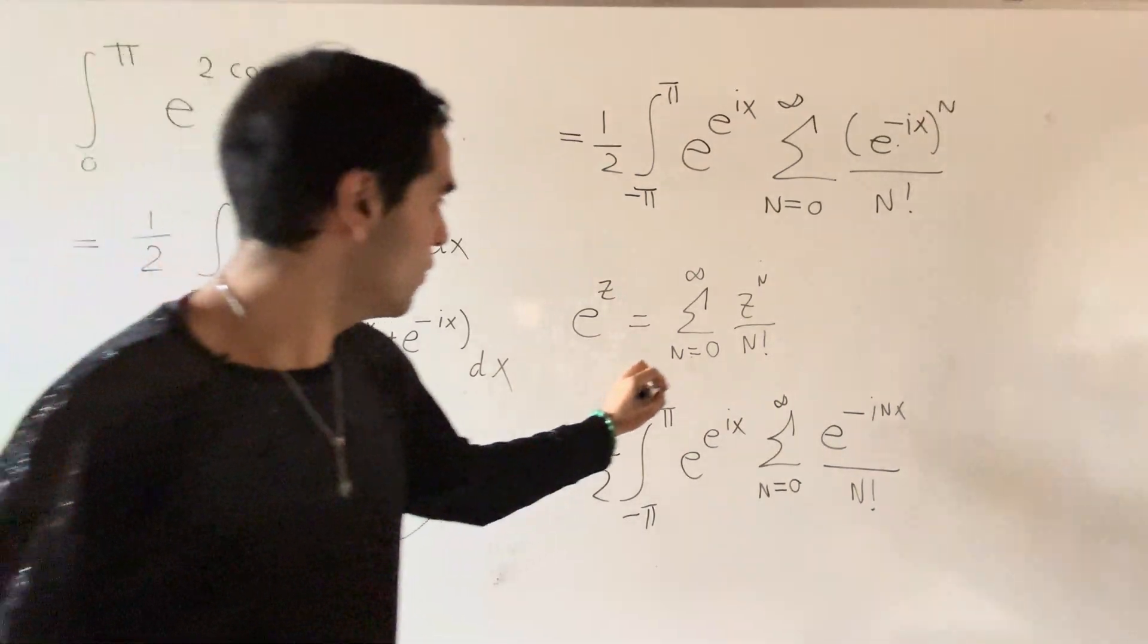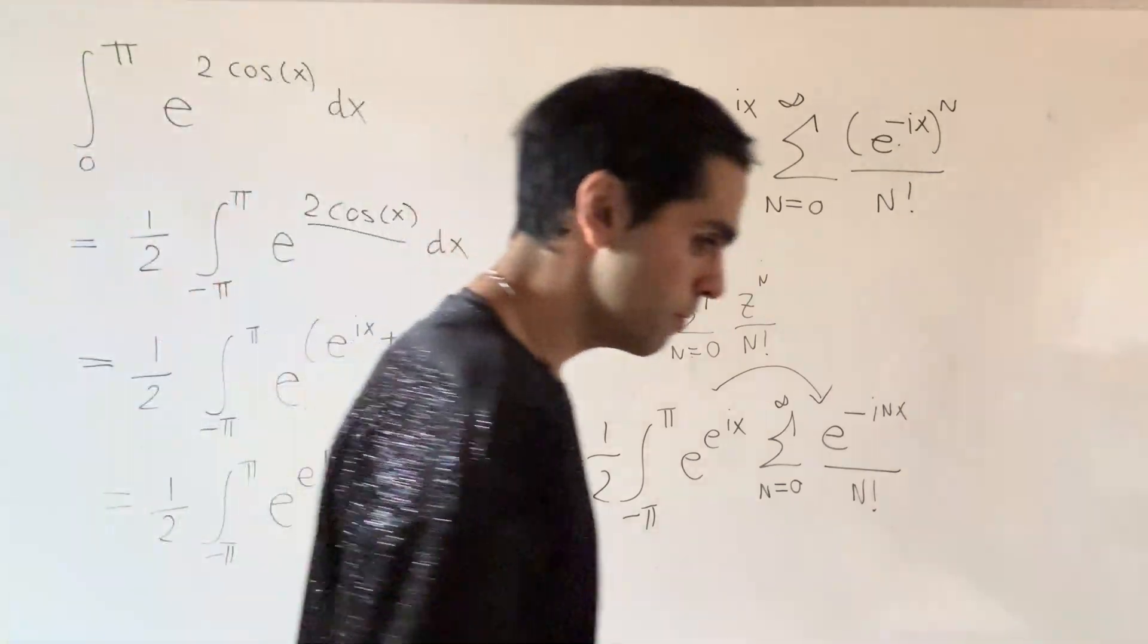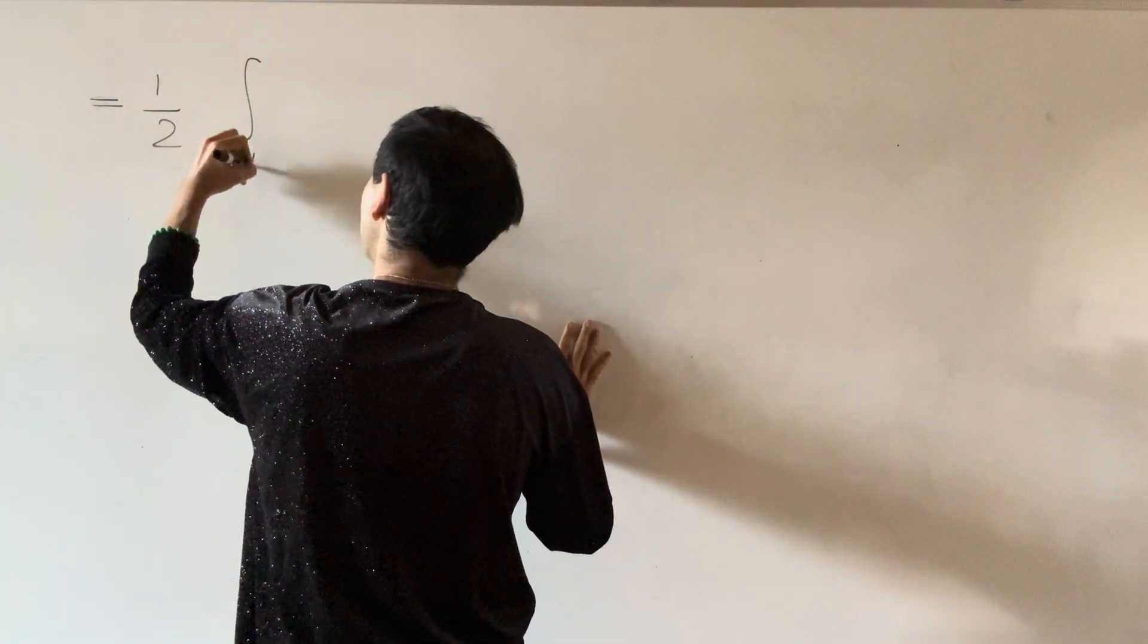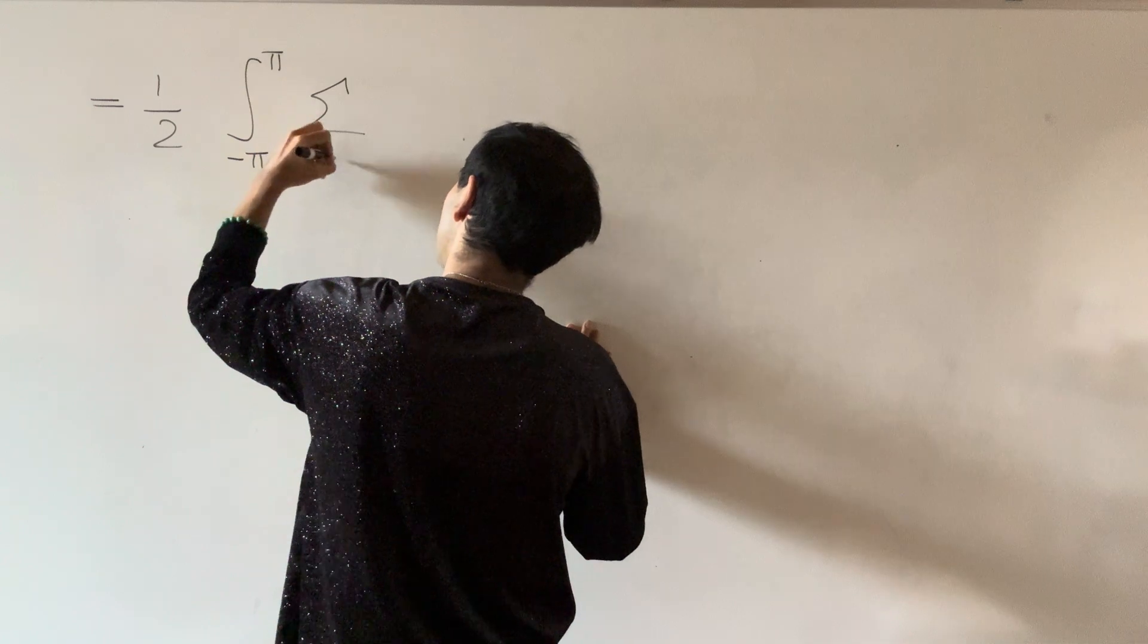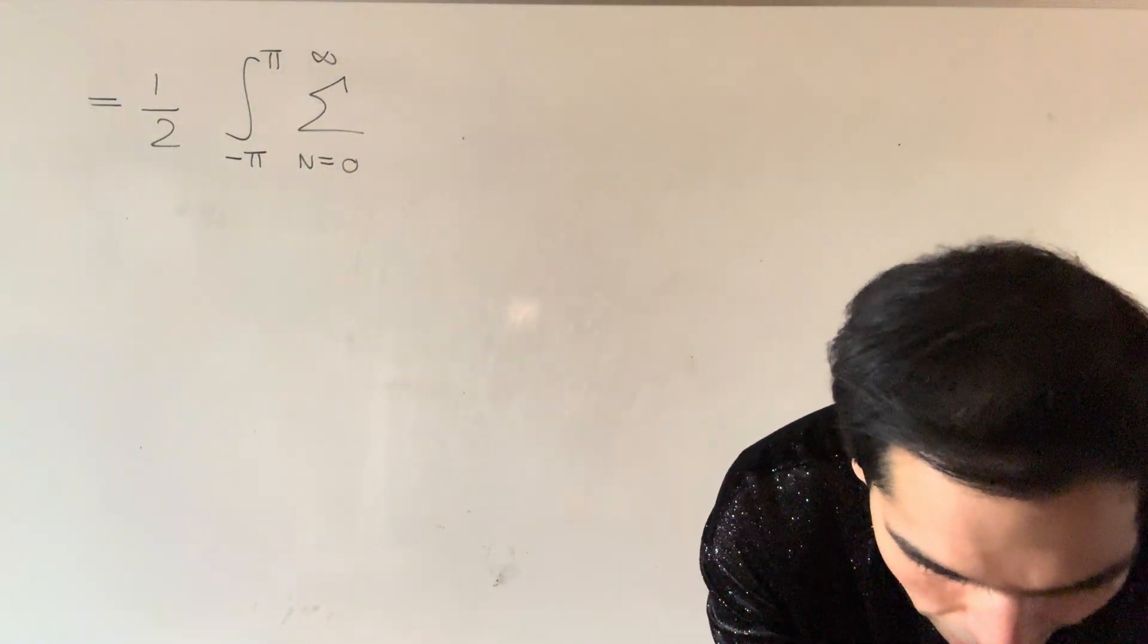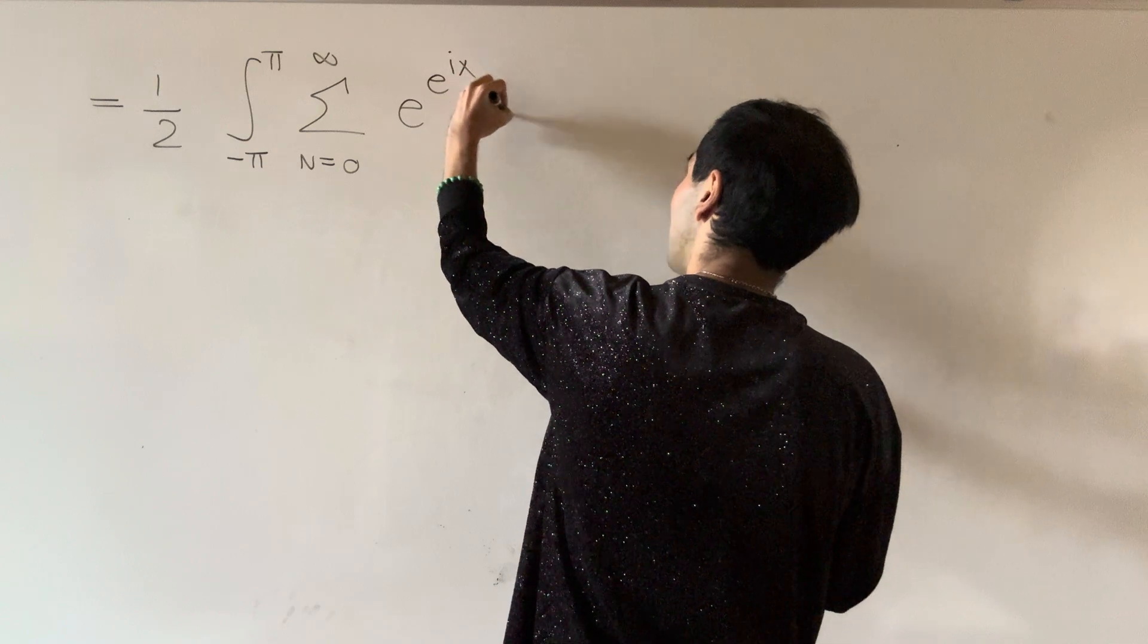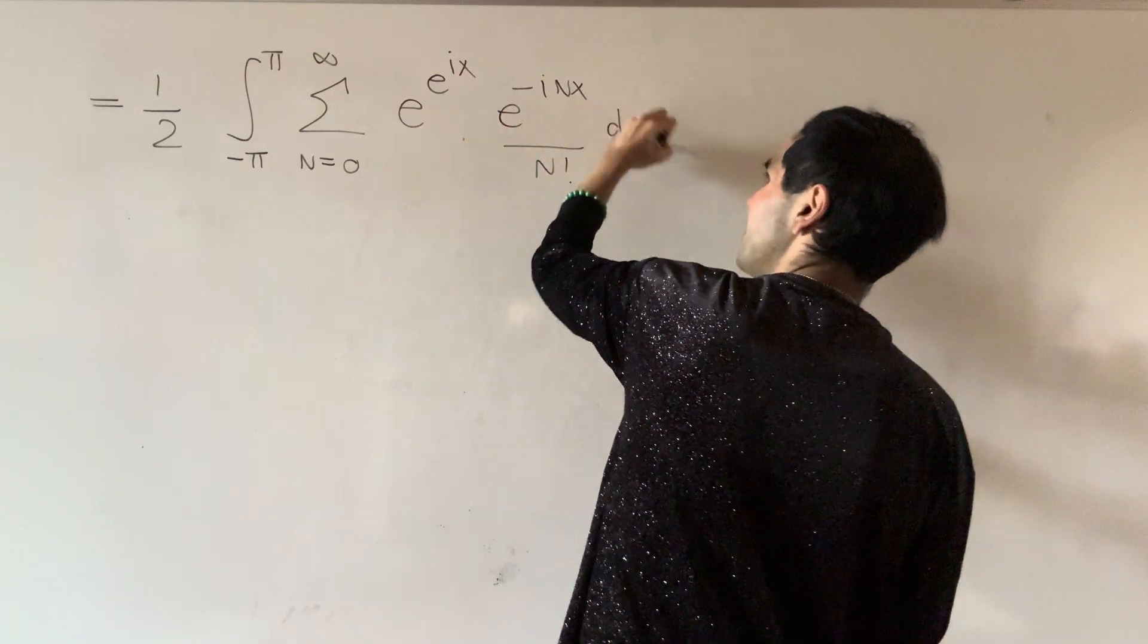And then what we want to do, we want to put this inside. So then what we get is one half, and an integral from minus pi to pi, sum from n from 0 to infinity of e to the e to the i x, and the e to the minus i n x over n factorial dx.